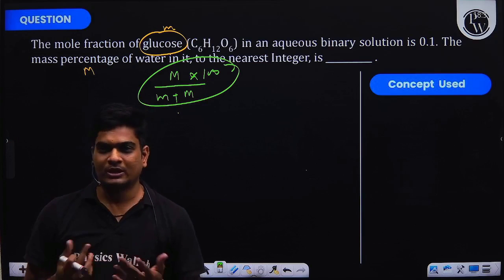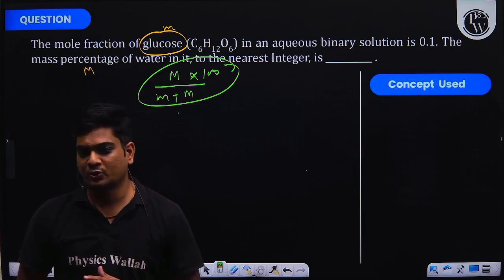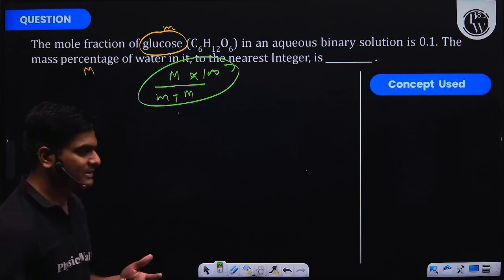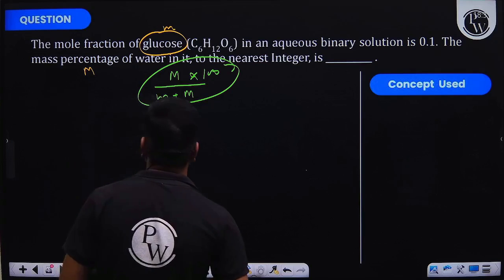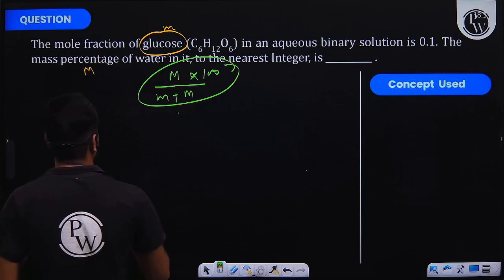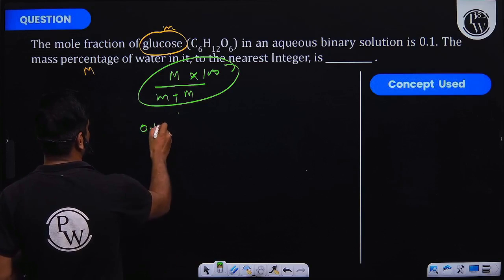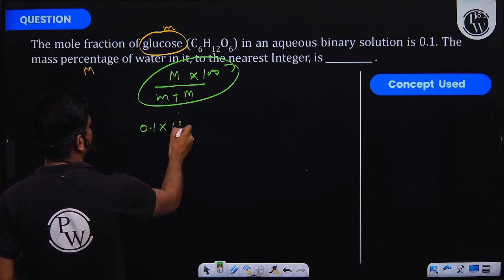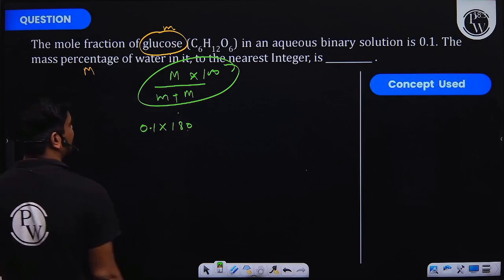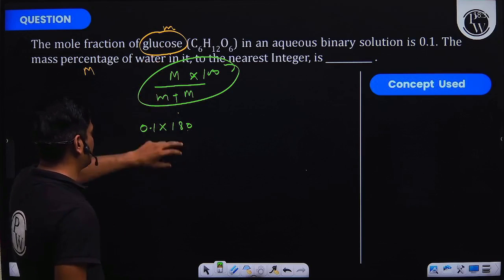You can also assume that total moles equals x, but for simplicity we are assuming that total moles in the solution is one. So moles of glucose will be 0.1 and mass of glucose will be 0.1 times 180. What is 180? 180 is the molar mass of glucose, so this would give us the mass of glucose.